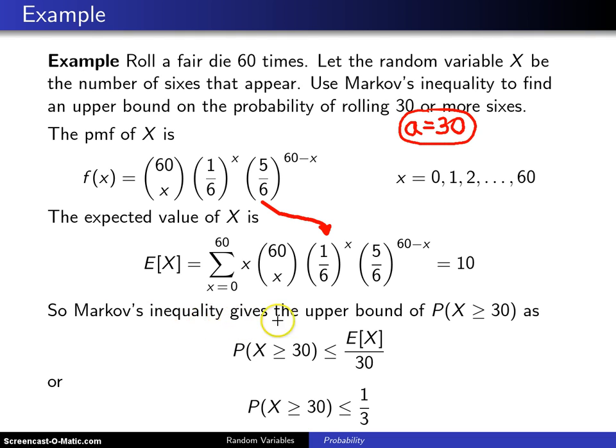So Markov's inequality will give you an upper bound on the probability that X is greater than or equal to 30, and that's going to be the expected value of X divided by a, which in this case is 30.